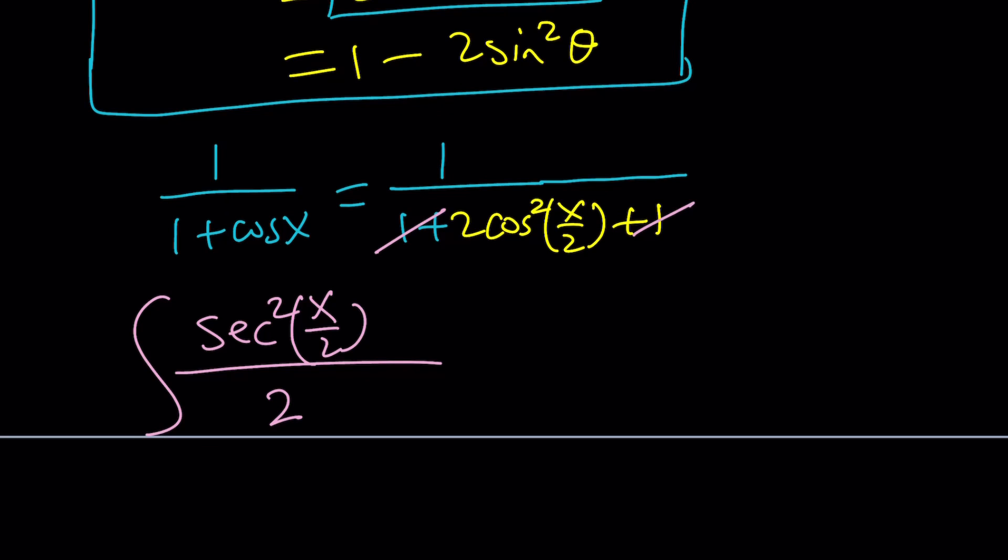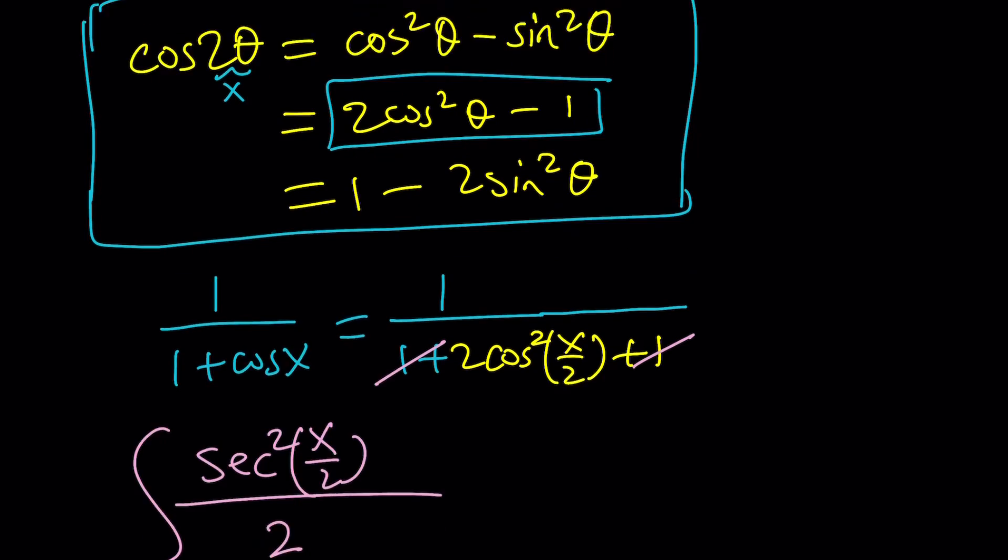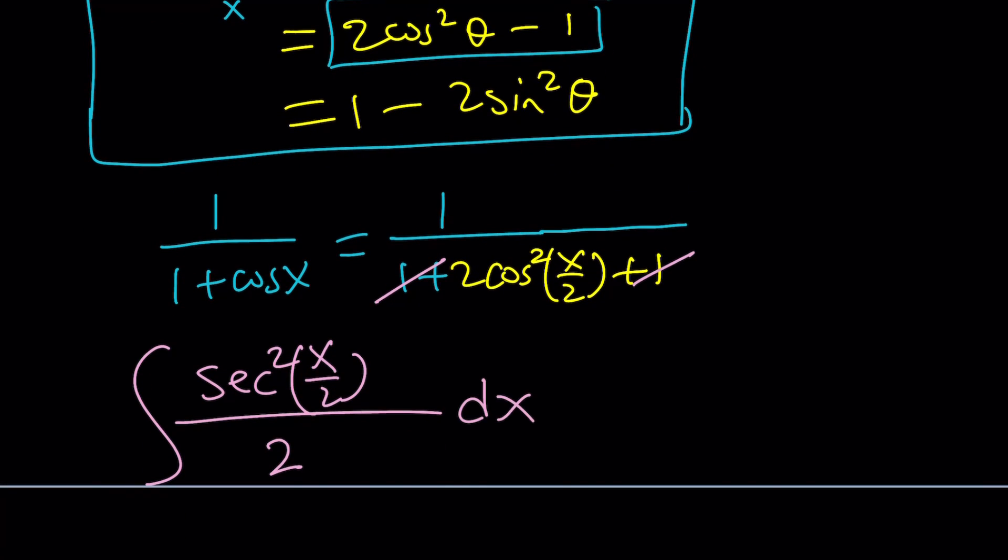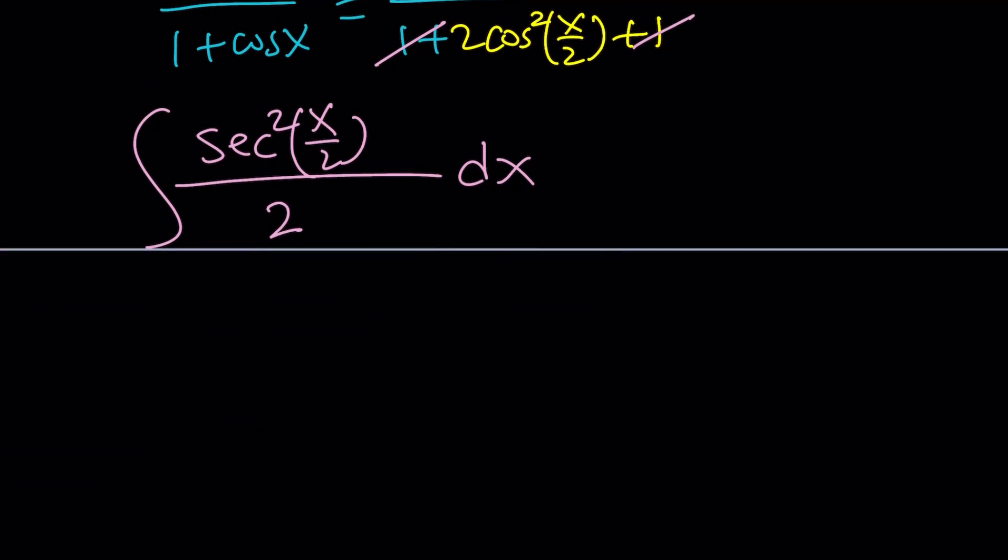Now how do you integrate secant squared? First of all let's take out this 1 half, which is kind of annoying. And then think about the integral of secant squared. You hopefully know that if you differentiate tangent you get 1 plus tangent squared, or just secant squared. So the integral of secant squared is actually tangent. Wow, that's simple. So if you integrate secant squared you're going to get tangent.